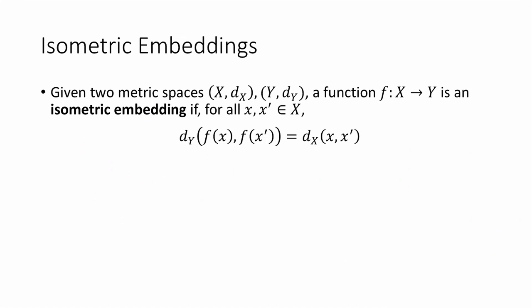When we can do this exactly is called an isometric embedding. So more formally, given two metric spaces, (X, d_X) and (Y, d_Y), we say that a function f that maps X to Y is an isometric embedding if, for all points x and x' in X, the distance according to Y's metric between the images f(x) and f(x') should be equal to the distance according to X's metric between x and x': d_Y(f(x), f(x')) = d_X(x, x').